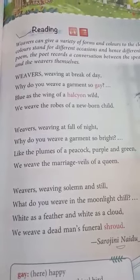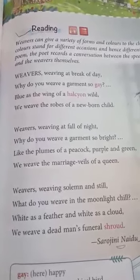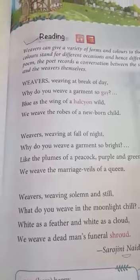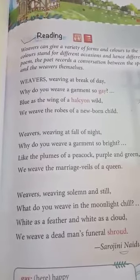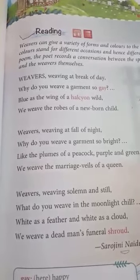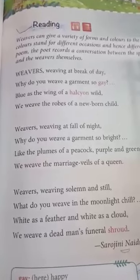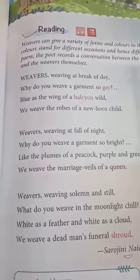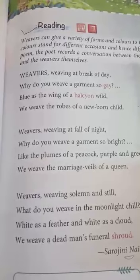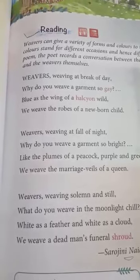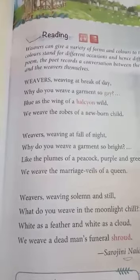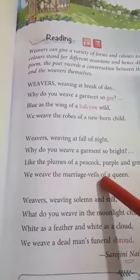Moreover, it is also the time during which most marriages take place, and that is why the weaver is weaving during this time. The poetess questions that this garment looks so bright with so many vibrant colors like the feathers of a peacock. Then the weaver replies that they weave the marriage veils of the queen, thus referring to the second, or in other words, the adult stage of life. First it was childhood; now it is adulthood.